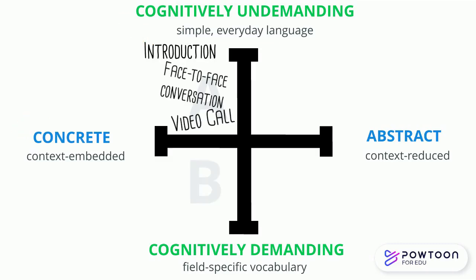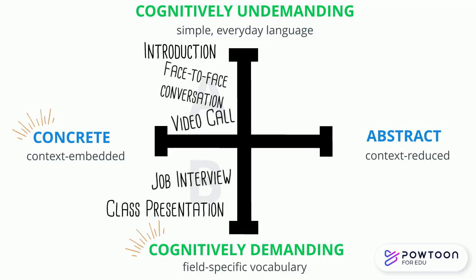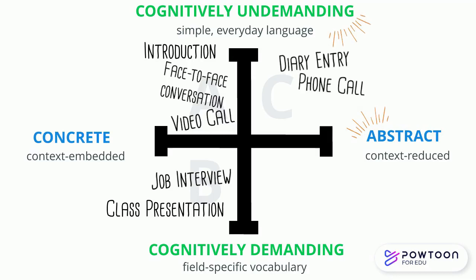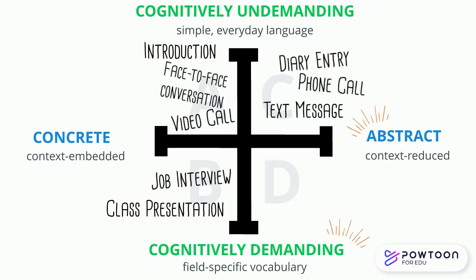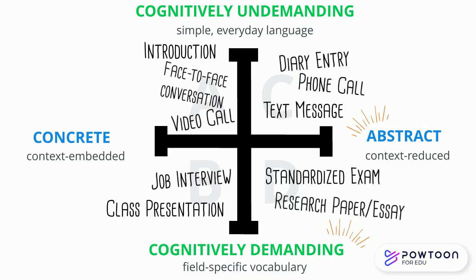Quadrant B is concrete and cognitively demanding. This includes activities such as a job interview or a class presentation. Quadrant C includes abstract and cognitively undemanding activities, such as a diary entry, a phone call, or a text message. Quadrant D is abstract yet cognitively demanding. This quadrant can include activities such as a standardized exam or a research paper.